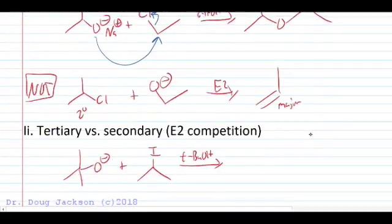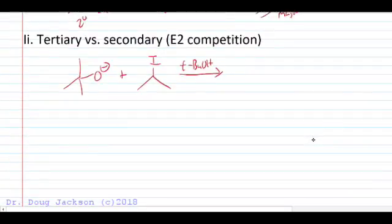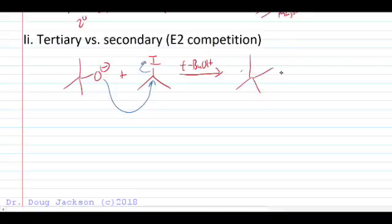Now, suppose we have a tertiary versus a secondary. This is not the best because we're always going to get E2 competition, and the E2 is probably going to win. Yes, we could get a small amount of our desired product. These are kind of weird ethers anyway. It's not something that we generally want to make anyway, but we would get a minor product in this situation. The major would actually be an E2 where we'd pull off the beta hydrogen and kick off the iodide leaving group in that situation.